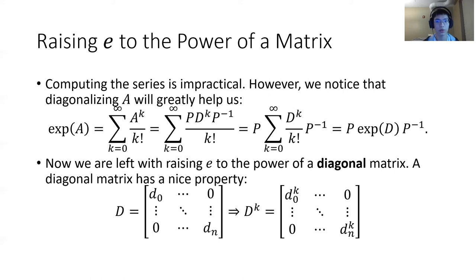So we are left with p times d to the power of k times the inverse of p. Then we switch the problem from calculating the exponential of a to calculating the exponential of d. d is a diagonal matrix, raised to the power of k resulting in a nice form. The formula is shown here.